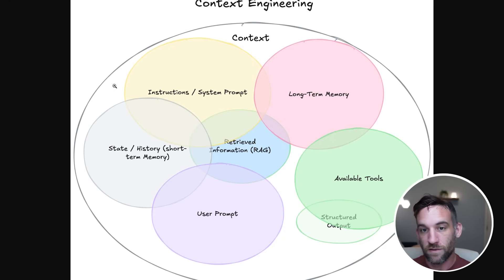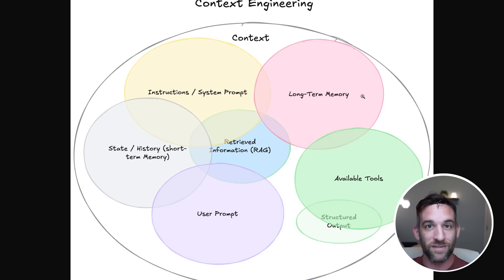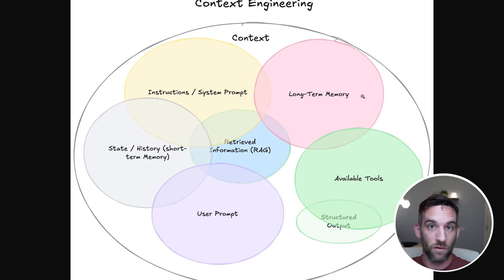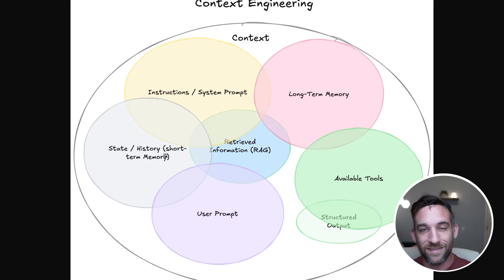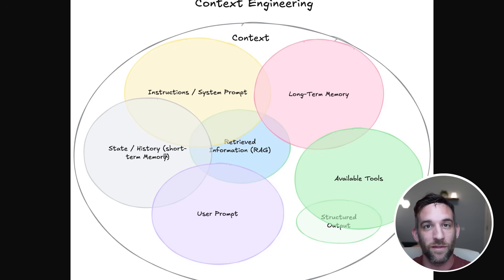All these things can serve as context for our system. You have the basic instructions and system prompt. Then there's long-term memory, which persists after the session is over so you can use it in future sessions - it takes information from all sessions and makes it available across sessions. Then you have state or history, which is short-term memory. For instance, CrewAI flows has state, meaning while the flow is running you can save state and use it across other crews and Python executions.